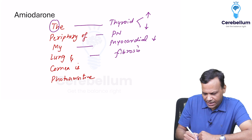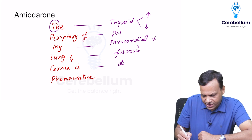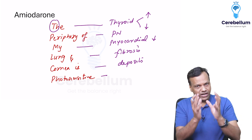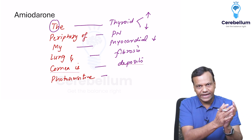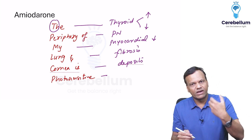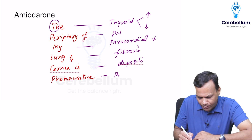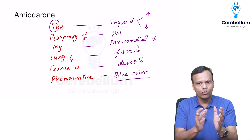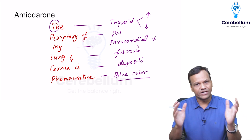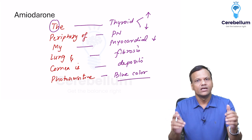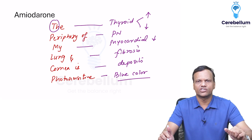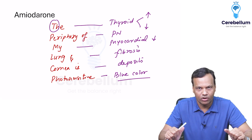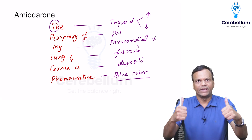Amiodarone can cause pulmonary fibrosis, get deposited in the cornea, and if the person is exposed to sunlight they may develop a skin rash — particularly a blue-colored rash, known as blue man syndrome. These are the important side effects of amiodarone. Happy learning!